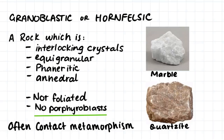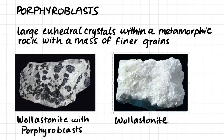Granoblastic rock does not contain porphyroblasts. Porphyroblasts are large euhedral crystals within the metamorphic rock. Wollastonite is a mineral that only forms through metamorphic action, and these porphyroblasts within the wollastonite only really form due to metamorphic transformation.